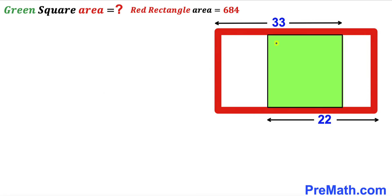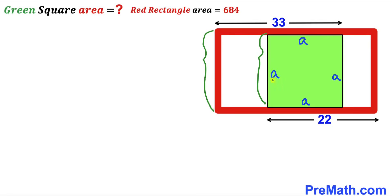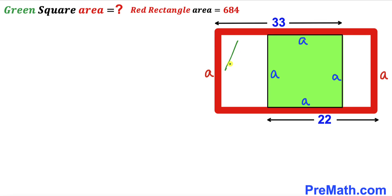Let's get started by focusing on this green shaded square. Since we are dealing with a square, all side lengths are equal. I'll label the side length of the green square as lowercase a, so all four sides are a. The opposite sides of the rectangle are equal as well. I'll label the left rectangle's side length as x, and likewise focus on the other rectangle.